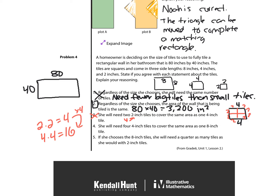Statement 4: you'll need 4 four-inch tiles to cover the same area as one 8-inch tile. If this is an 8 by 8 tile and I break it down, each piece is 4 inches. Sure enough, 4 four-inch tiles does cover the same area — that's a yes. 8 times 8 is 64, and 4 times 4 is 16, and 16 times 4 is 64. That's another way to prove it.